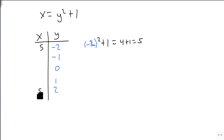We're going to get 5 and 5. We're going to get minus 1 squared plus 1, which is 1 plus 1, which is 2. And we're going to get 0 squared plus 1, which is 0 plus 1, which is 1.